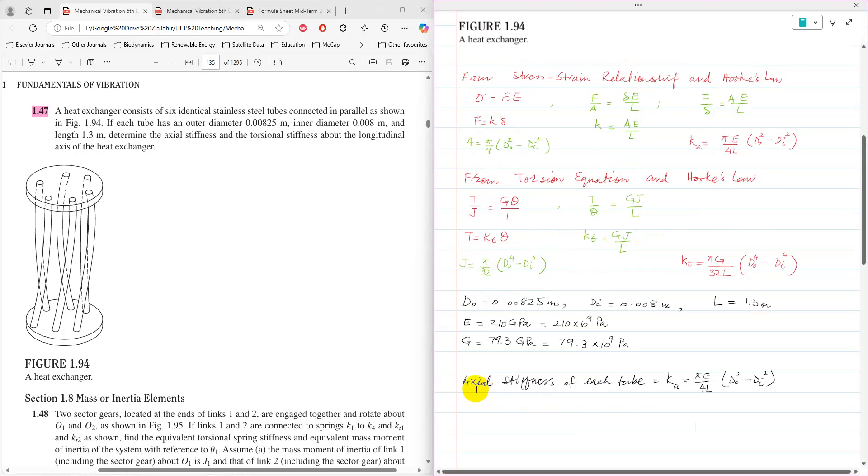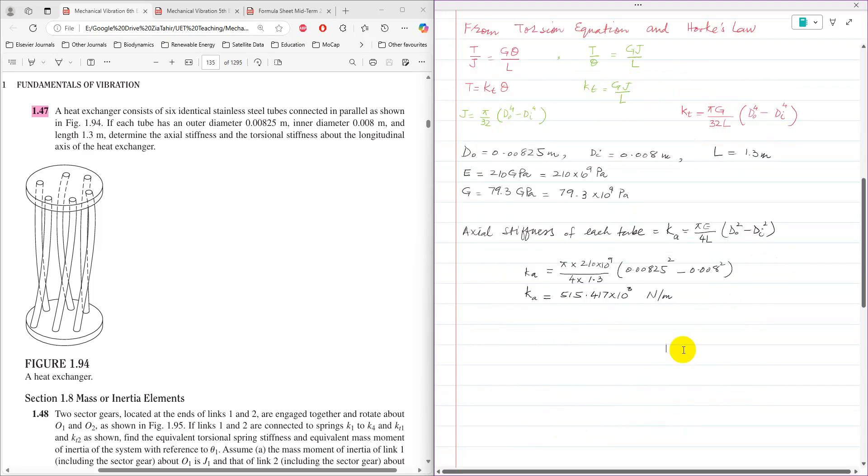First, I am going to calculate axial stiffness of each tube. K_A, the formula which we have here, using D_O, D_I, L and E as 210 into 10 to raise power 9 Pascal. After substituting the values in this expression, K_A is pi into 210 into 10 to raise power 9, over 4 into 1.3, times D_O square minus D_I square. Stiffness of each tube comes as 417.4 into 10 to raise power 3 Newton per meter. That is the stiffness of each tube.